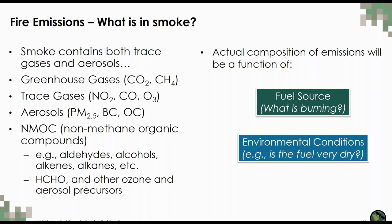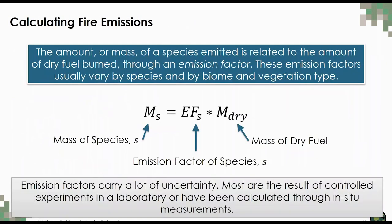The actual composition of emissions from a given fire will be a function of the fuel source — is it a forest, a tropical forest, savannah and grassland, or shrub? — and the environmental conditions. The amount of a particular species emitted, whether trace gas or aerosol, is directly related to the amount of dry fuel burned through an emission factor. Emission factors vary depending on biome or vegetation type. So for every unit mass burned of, say, tropical forest, an emission factor tells us how much PM 2.5 is estimated to have been emitted. Emission factors are very uncertain, as most have been calculated in laboratories or through in situ measurements and are then applied to broad regions.